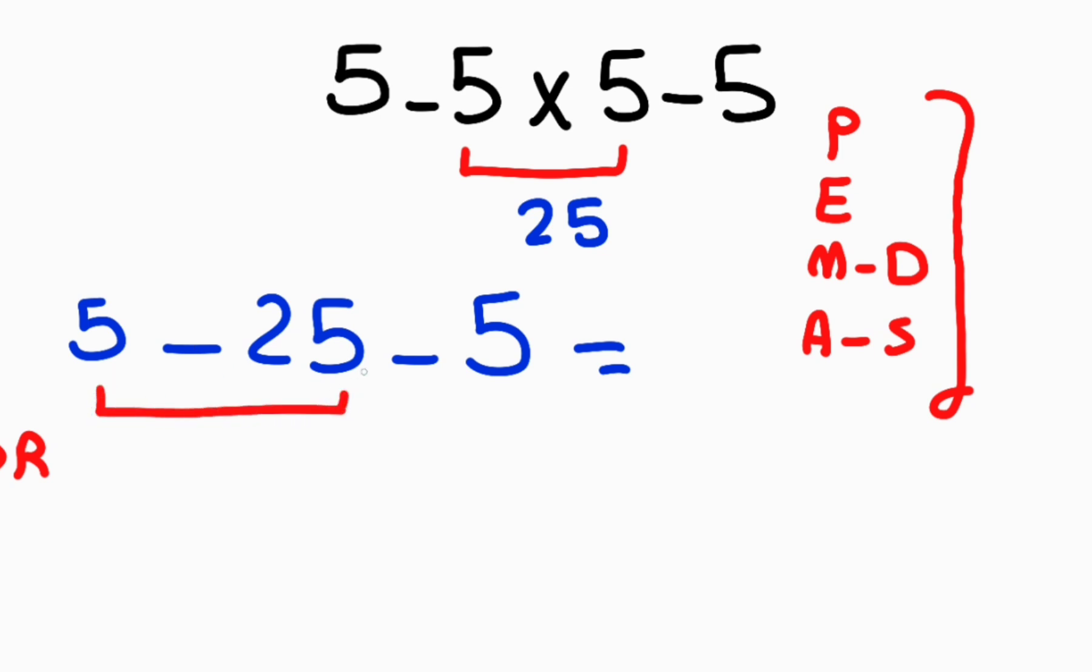Now 5 minus 25 gives us negative 20, and negative 20 minus 5 equals negative 25. So the final answer is negative 25.